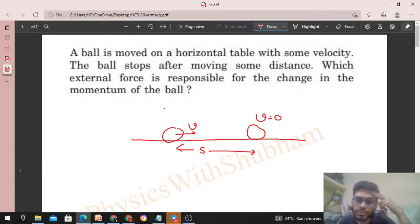So aap deko, aapka joh system, what is your system? Agar mein ball ko system treat karta hon, then table joh force lagayega is ball pe that will be an external force. And joh ball move karegi on the surface of this table, there will be a force of friction exerted by the table on the ball. Ball pe ek friction force lagayega by the table piche ke taraf. So yeh retard karna start karegi. Let's say friction force is f.